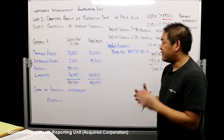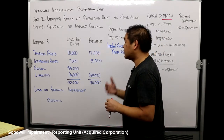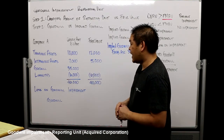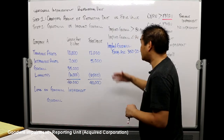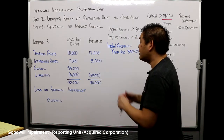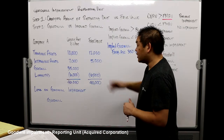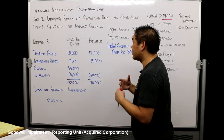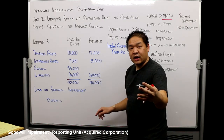Let's go through a simple example. We invested in Company A. Their tangible assets sit on our books at $10,000; intangibles at $7,000; goodwill at $35,000; and liabilities at $6,000. The fair market values are: tangible assets $12,000; intangible assets $5,000; liabilities $6,000. We're testing goodwill for impairment. If we were to sell Company A in the open market today, the fair market value would be $40,000.